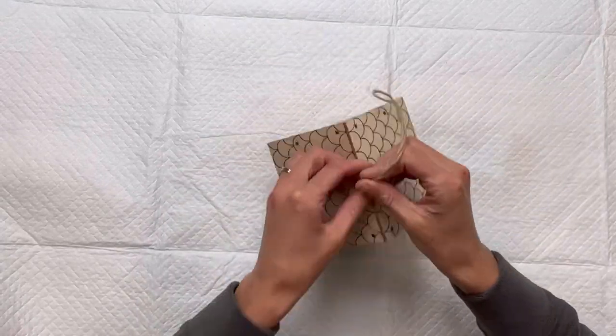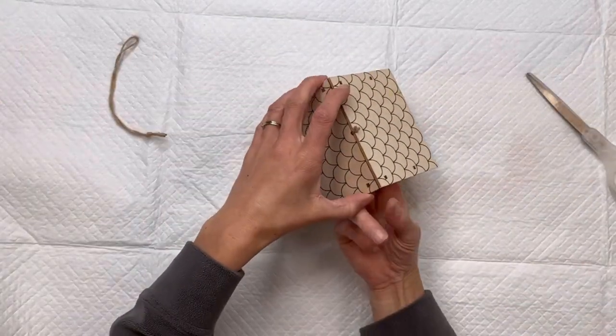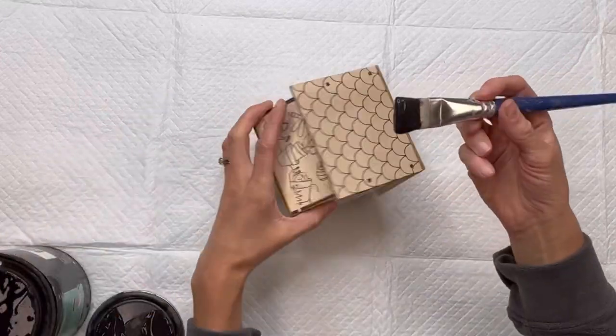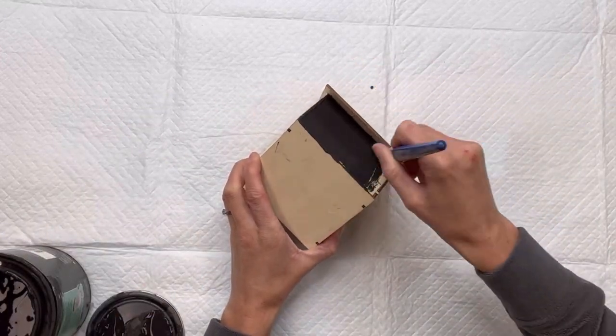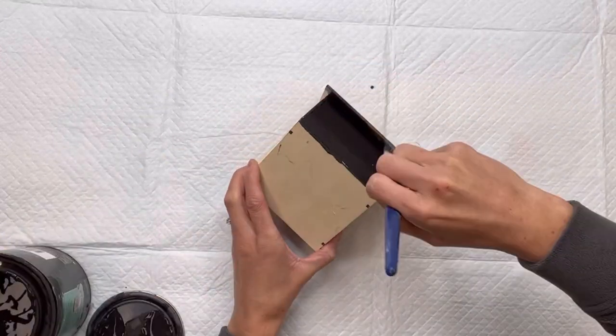I got this wood birdhouse from Hobby Lobby. It was in the kids craft section and I'm going to start by painting the entire thing using some Wise Owl black paint.